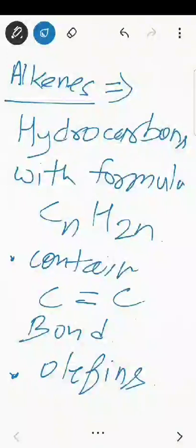This carbon-carbon double bond provides many different properties to these alkenes because it acts as an electron-rich site. It also determines the types of reactions alkenes give, which are electrophilic addition reactions, because this carbon-carbon double bond is an electron-rich site that attracts electrophiles towards it.